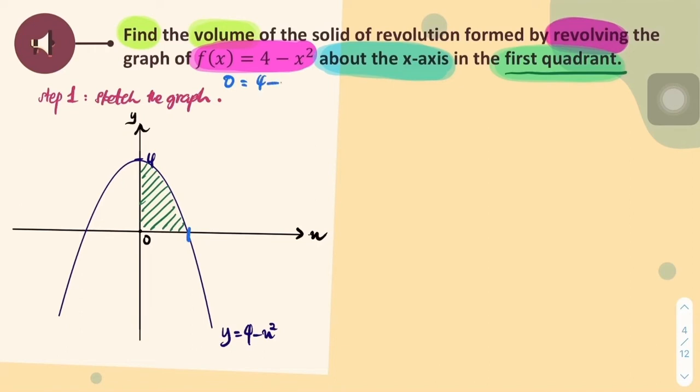But we have a problem here. We do not know the x-intercept. Therefore, we let y equals 0. And there you go. I got x is equal to 2 and negative 2.